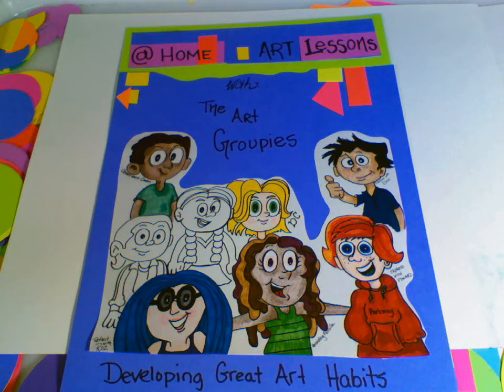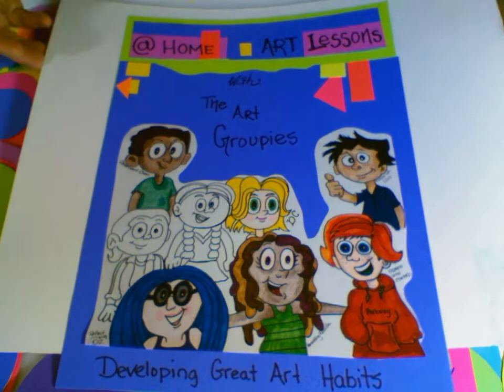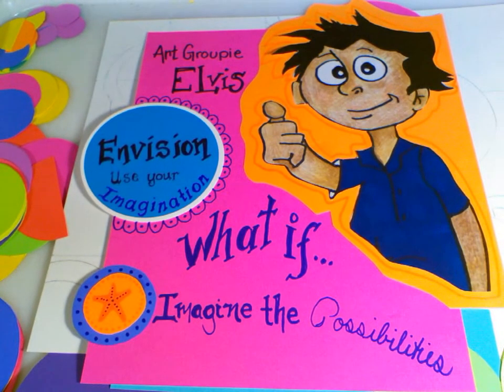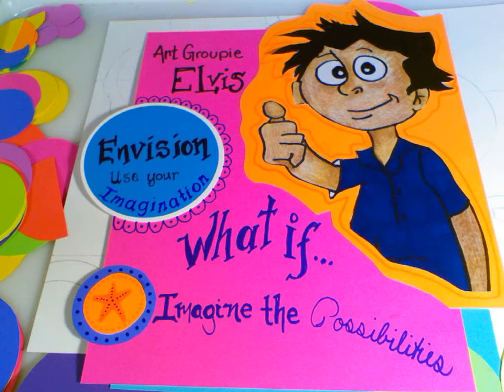Hi and welcome back to at-home art lessons with the art groupies. We're developing great art habits. The art groupie that we are going to be working with today is Elvis. Elvis is the type of groupie that uses his imagination. He envisions in his mind what exactly he's going to do and it's constantly changing. You need to imagine the possibilities with this art lesson because it's going to be a tough one.